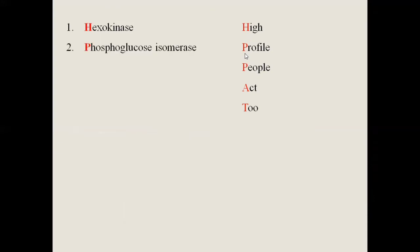The 'H' in 'high' stands for hexokinase, the enzyme in the first reaction. The 'P' in 'profile' stands for phosphoglucose isomerase, the second enzyme involved in glycolysis. The 'P' in 'people' stands for phosphofructokinase-1.